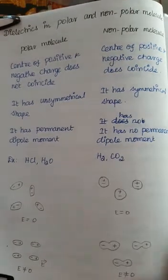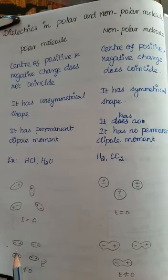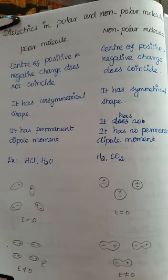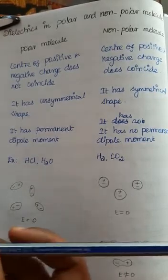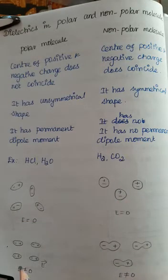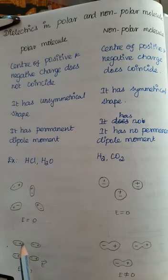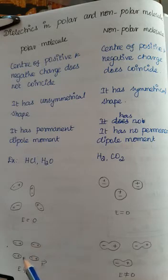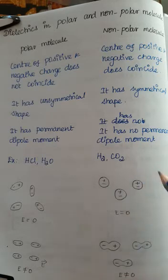When an electric field is applied, all the positive charges get displaced in the direction of the applied electric field, while the negative charges align in the opposite direction of the applied electric field. This displacement stops when the applied electric field becomes equal to the restoring force. The restoring force is created by the dipole moment, and when it equals the applied electric field, displacement stops.